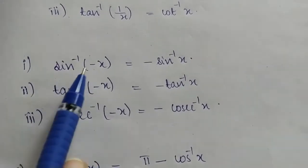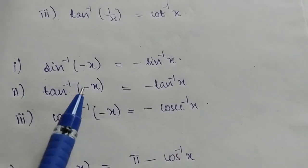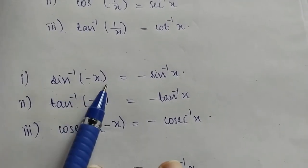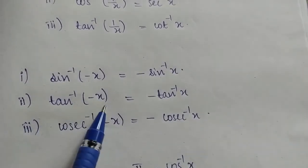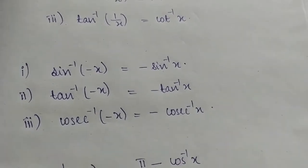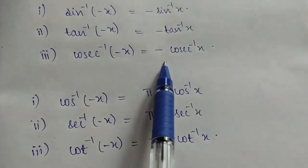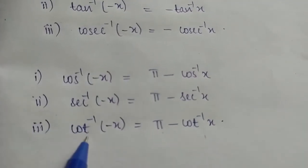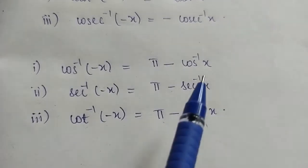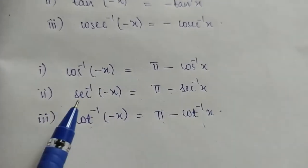In the second set, we use minus x. Sin inverse of minus x is the same as minus sin inverse x. The same applies to tan inverse. For the other three: sin inverse of minus x equals minus sin inverse x, and tan inverse of minus x equals minus tan inverse x.